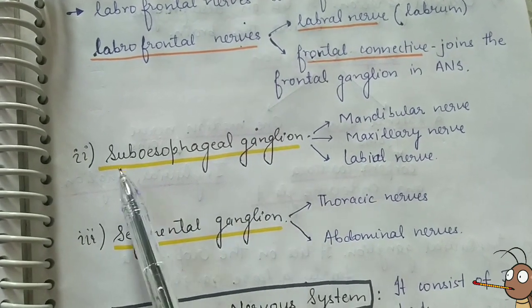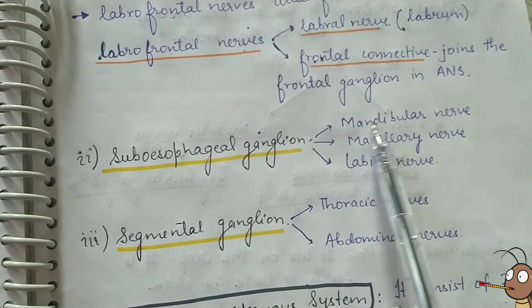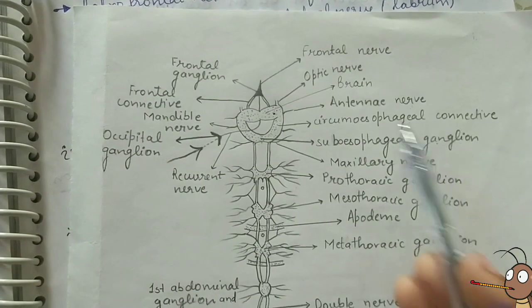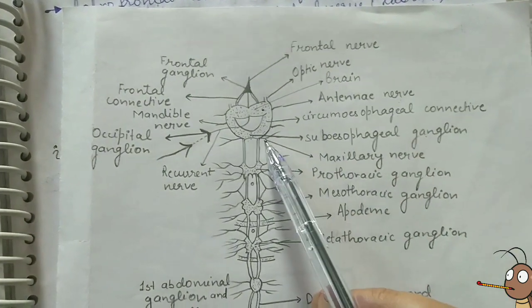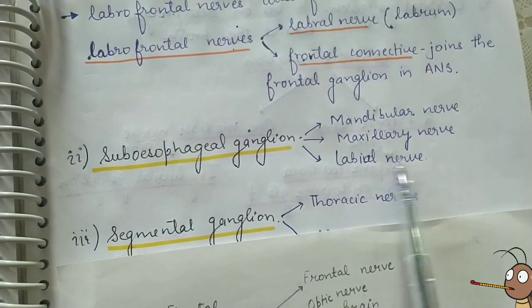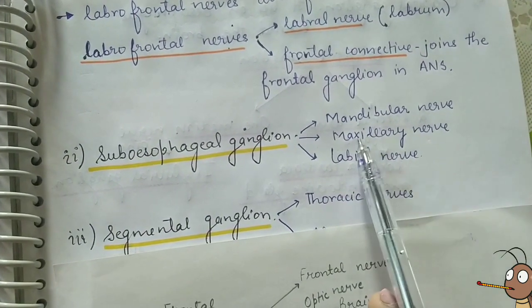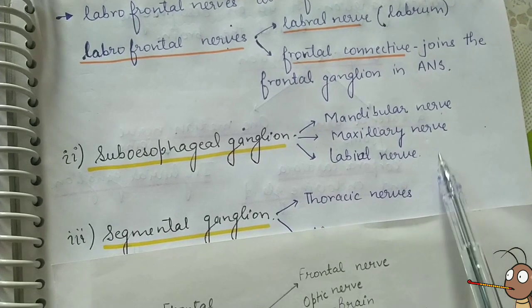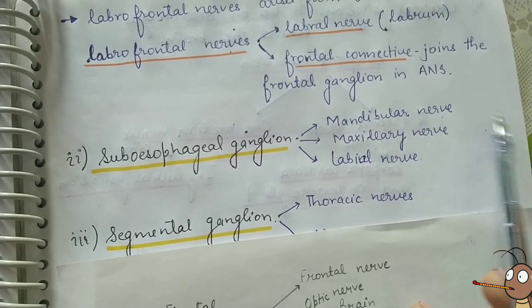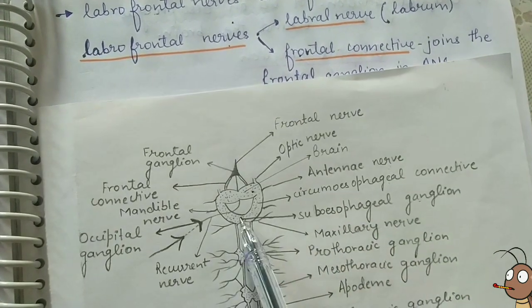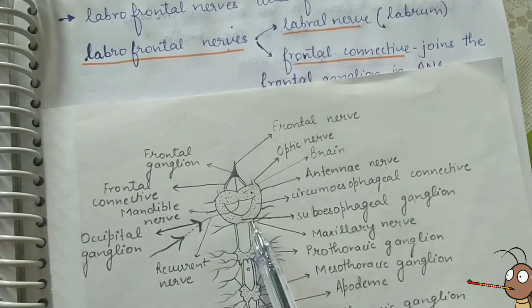From the subesophageal ganglion, nerves also arise: the mandibular nerve, maxillary nerve, and labial nerve. The labial nerve supplies to the labium, the maxillary nerve supplies to the maxilla, and the mandibular nerve supplies to the mandible. All three are the mouthparts of the cockroach, and these three nerves supply to the mouthparts, arising from the subesophageal ganglion.